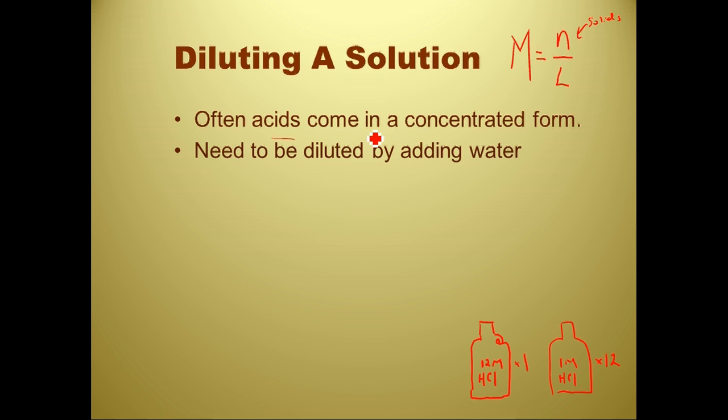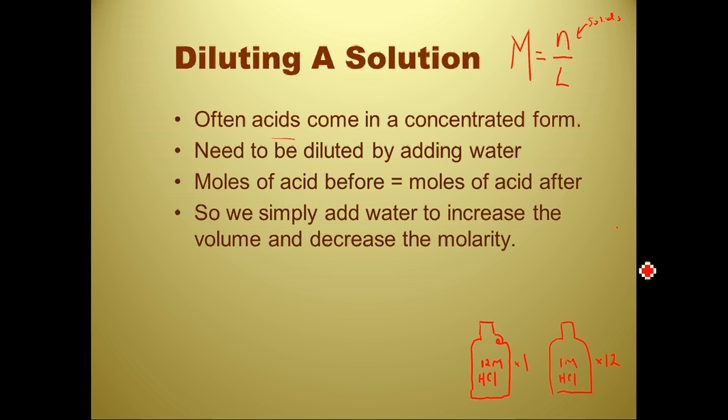So often acids and other chemicals come in a concentrated form, and they need to be diluted by adding water. That's a pretty simple idea. The moles of the acid before are going to be equal to the moles of the acid after. It's just that you're diluting it. You're adding more water. So we always increase molarity. We have a relationship here. This is the important mathematical idea. The molarity of the solution before times the volume of the solution before is going to be equal to the molarity of the solution after times the volume of the solution after.